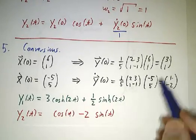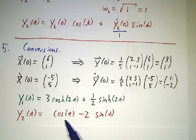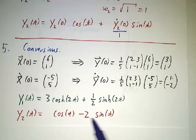For y2, the initial value is 1, the initial derivative is negative 2. So we get 1 times the cos minus 2 times the sin.